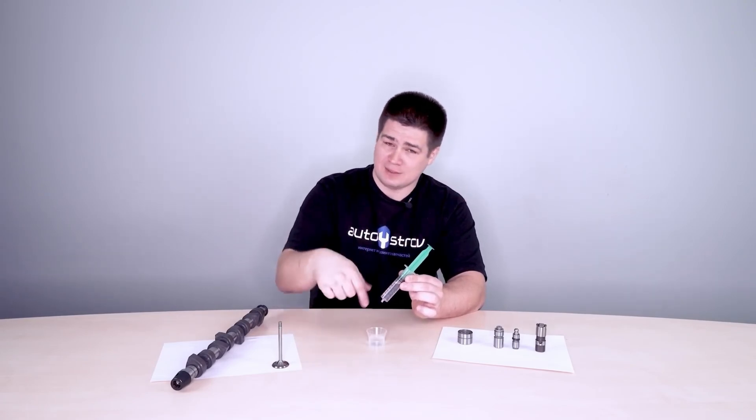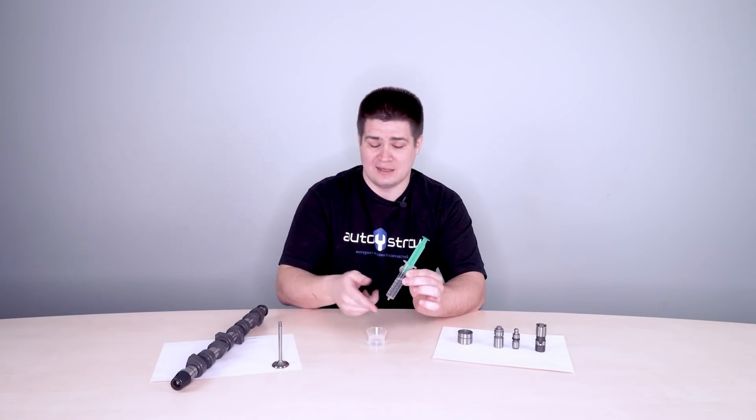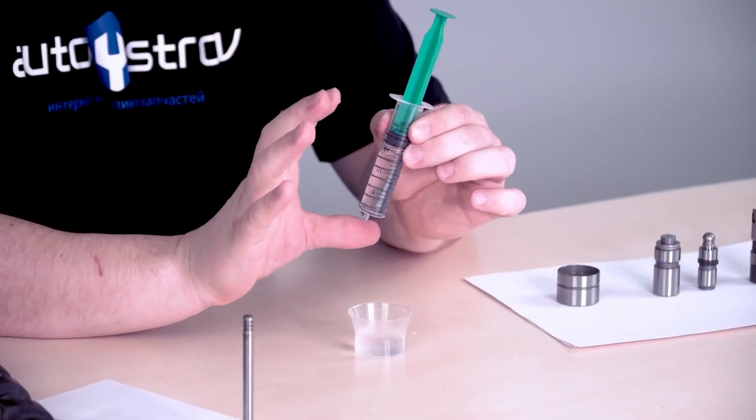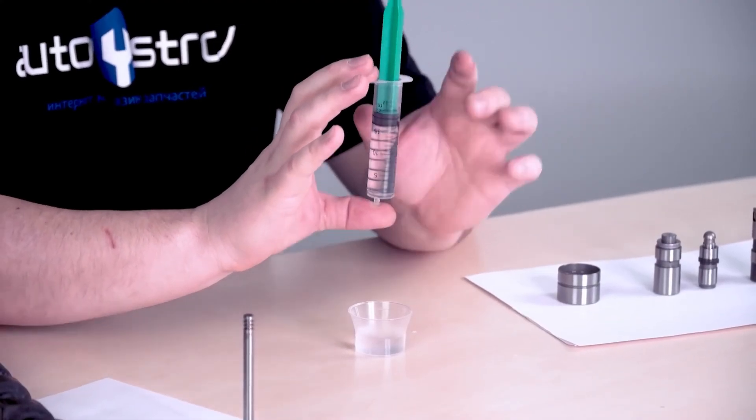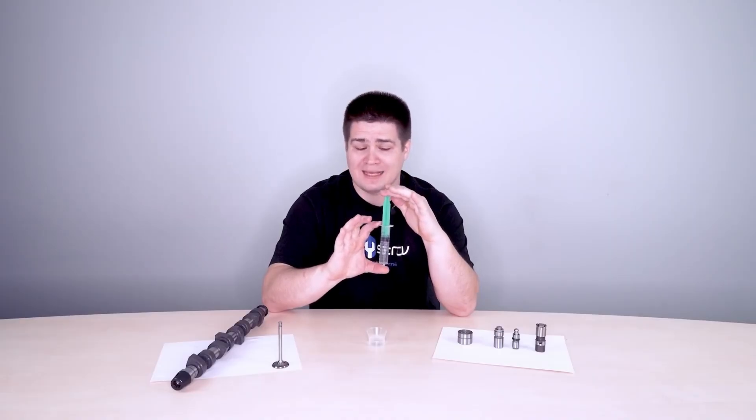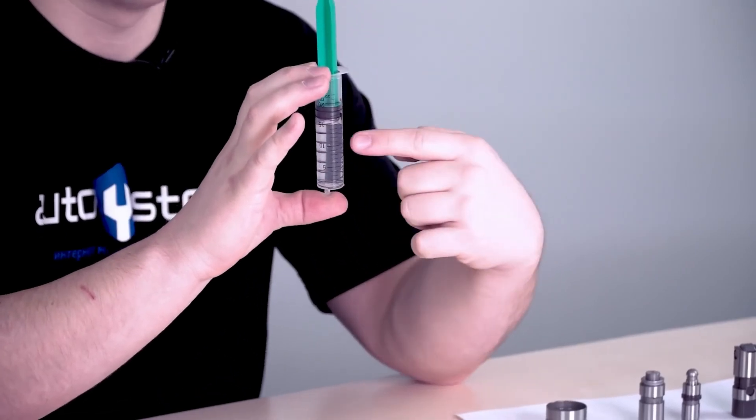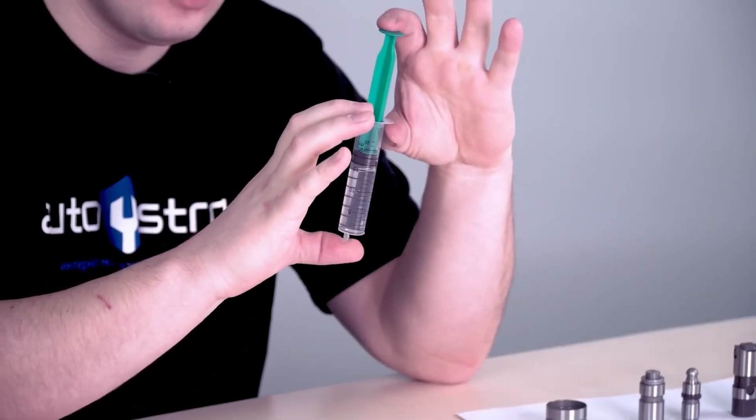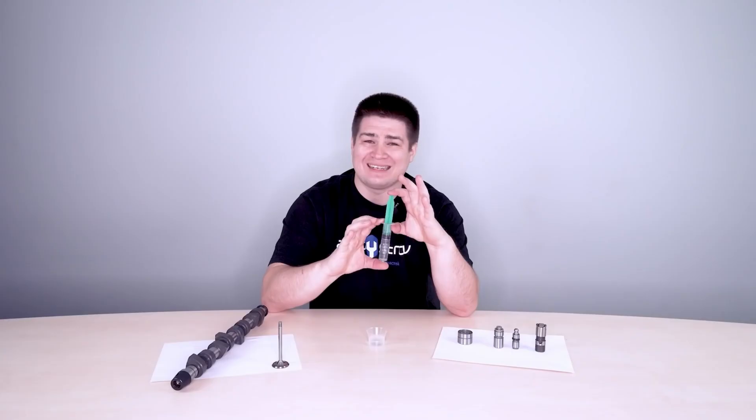This prevents the lifter from collapsing, which would not allow to open the valve fully. So now I will close it with my finger, thus simulating a valve, and when we try to press the hydraulic lifter, it does not collapse, because the oil is incompressible.